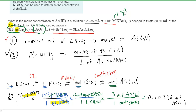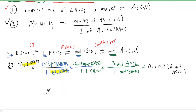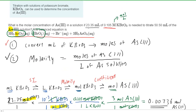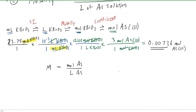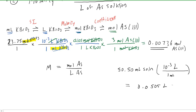In step two, we calculate the molarity using the formula: molarity of the arsenic ion equals moles of arsenic divided by liters of arsenic solution. The moles of arsenic were already obtained in step one. For the liters, we go back to the given information: there are 50.50 milliliters of the arsenic solution. Since that's in milliliters, we convert using 1 milliliter = 10⁻³ liters, giving us 0.0505 liters of the arsenic solution.